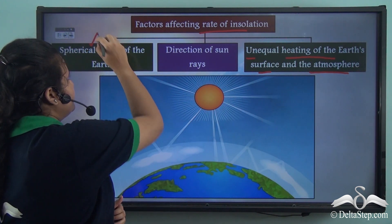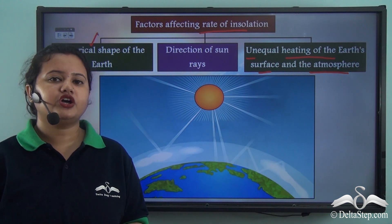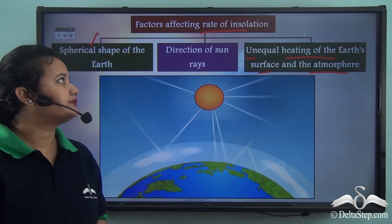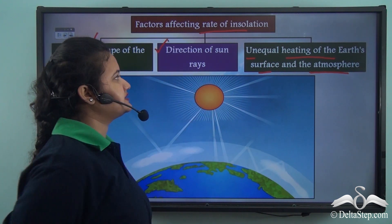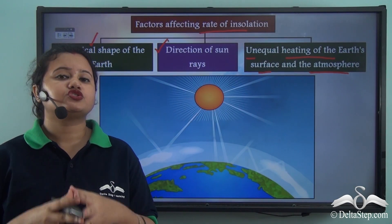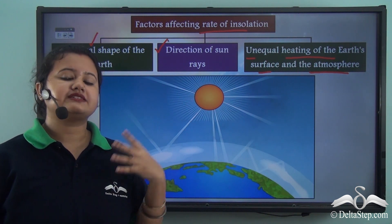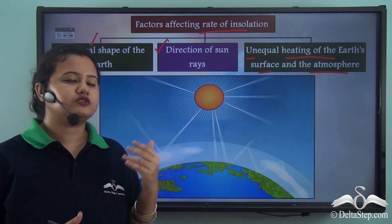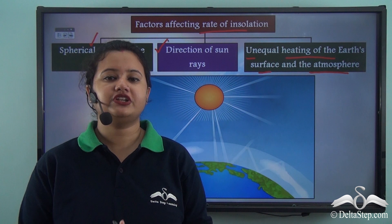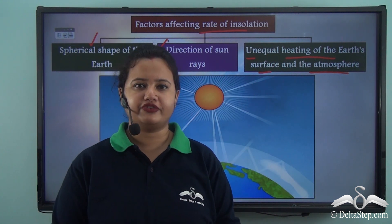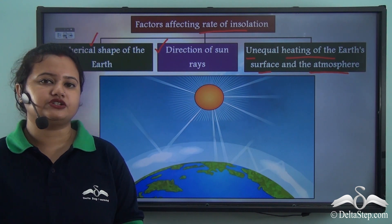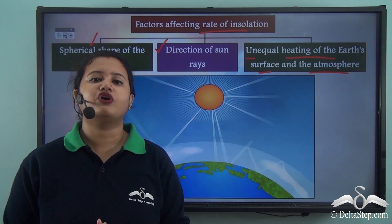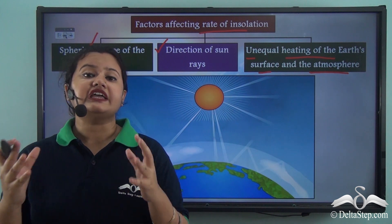The first factor is the spherical shape of the earth — due to this, the rate of insolation is highest at the equator while it decreases at higher latitudes. The next factor is the direction of sun rays: sun's rays are vertical at the equator so the rate of insolation is highest there, while slanting rays at the poles reduce the rate of insolation. The last factor is unequal heating of the earth's surface and the atmosphere. As the rate of insolation varies across latitudes, the temperature also varies, resulting in the existence of heat zones.